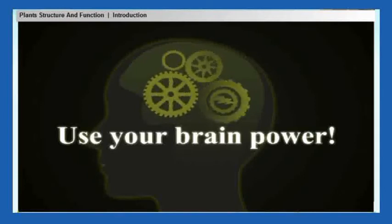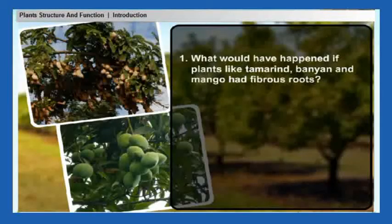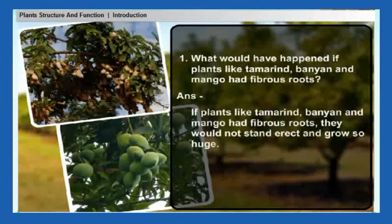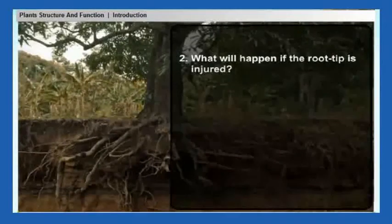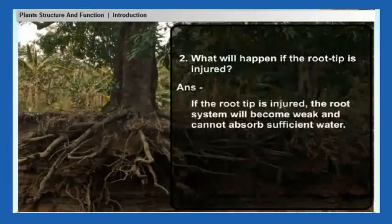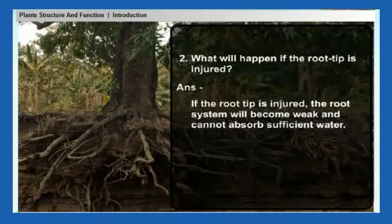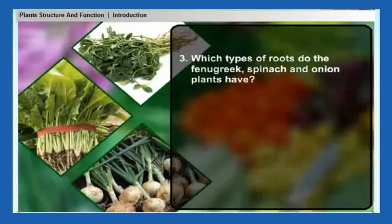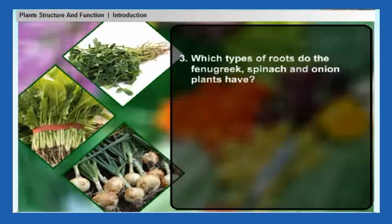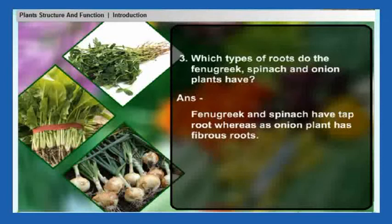Use your brain power. One: what would have happened if plants like tamarind, banyan, and mango had fibrous roots? They would not stand erect and grow so huge. Two: what will happen if the root tip is injured? If the root tip is injured, the root system will become weak and cannot absorb sufficient water. Three: which types of roots do fenugreek, spinach, and onion plants have? Fenugreek and spinach have tap roots, whereas the onion plant has fibrous roots.